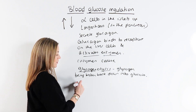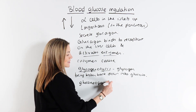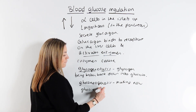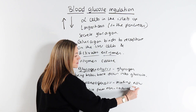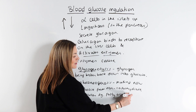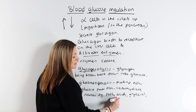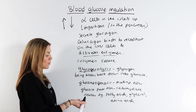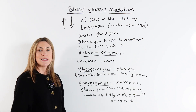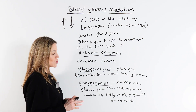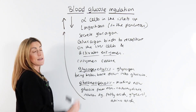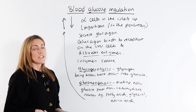The other thing these enzymes cause is gluconeogenesis — making new glucose from non-carbohydrate sources such as fatty acids, glycerol, and amino acids. The word makes sense: 'gluco' stands for glucose, 'neo' means new, and 'genesis' means making. So it's making new glucose from non-carbohydrate sources. That glucose then diffuses back into your bloodstream, brings your blood sugar back up, and returns it to normal — reversing the change.